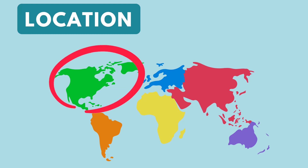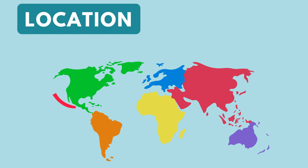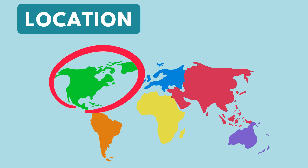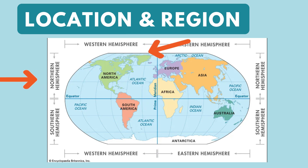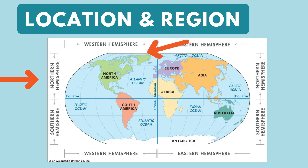Looking at the continents, I've circled North America on the map. When we're talking about location, we're talking about where is it? North America is found above South America. It's west of Europe. Looking at this map, we can identify both location and region of North America. On this map, we have the equator identified, so it helps us to see that North America is in the northern hemisphere. We also see, with the prime meridian labeled, that North America is in the western hemisphere.